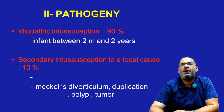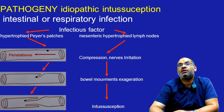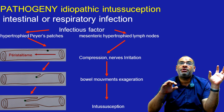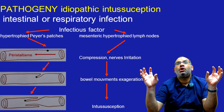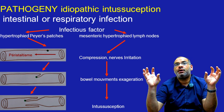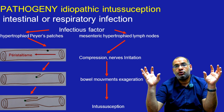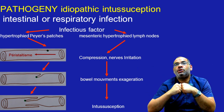For the idiopathic intussusception, we will have an intestinal or respiratory infection which will lead to hypertrophied Peyer's patches and also to mesentery hypertrophied lymph nodes. These two factors will lead to intussusception.